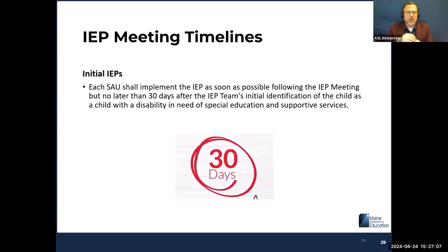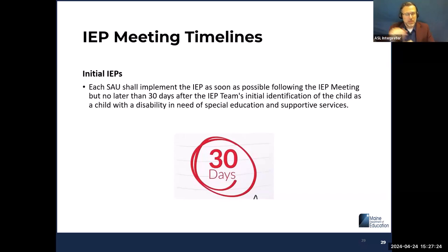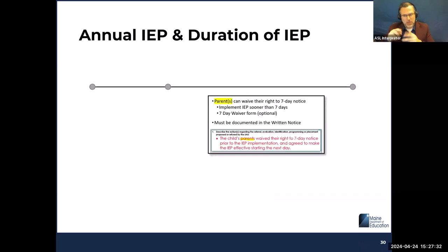For an initial IEP, each SAU must implement the IEP as soon as possible following the IEP meeting, but no later than 30 days after the IEP team's initial identification of the child as a child with a disability. So for that initial IEP, it has to be developed and implemented within 30 days of identification.